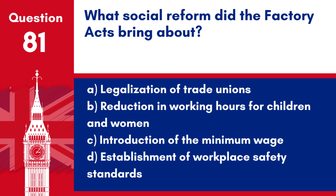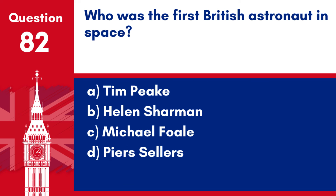Answer: b. Reduction in working hours for children and women. The Factory Acts were a series of laws passed in the 19th century aimed at improving conditions for workers, especially women and children in factories.